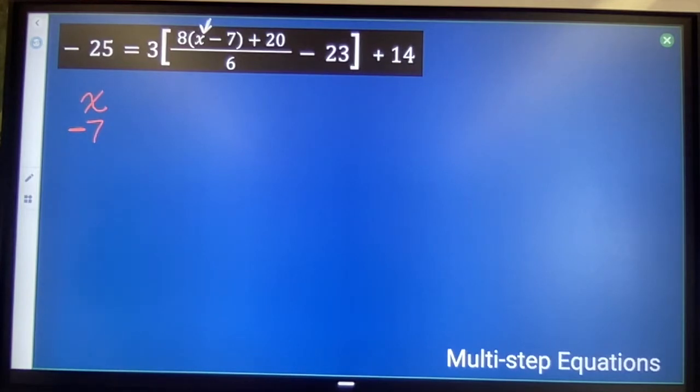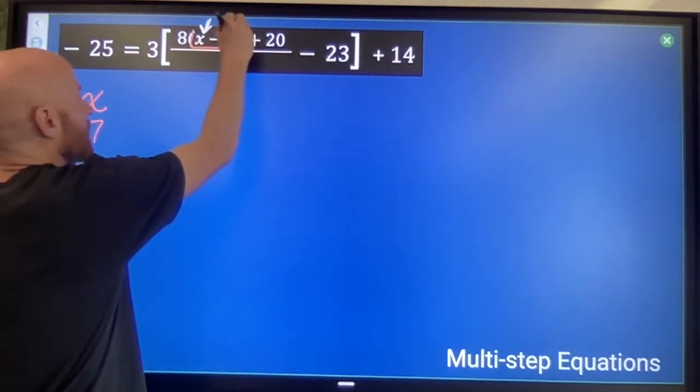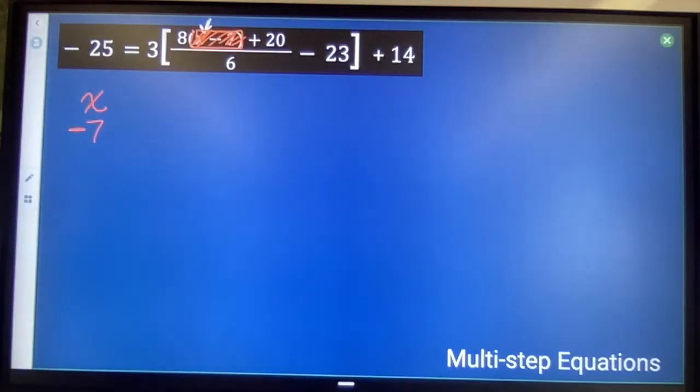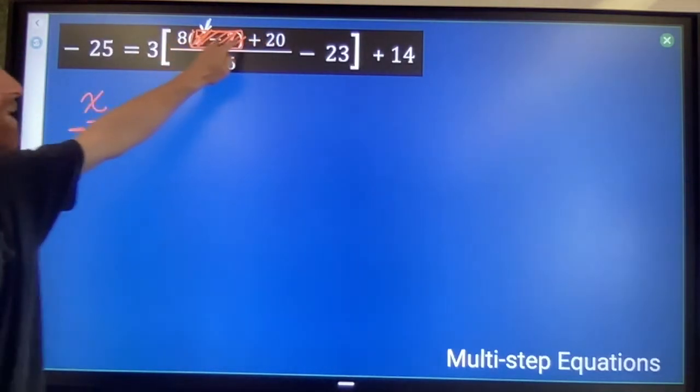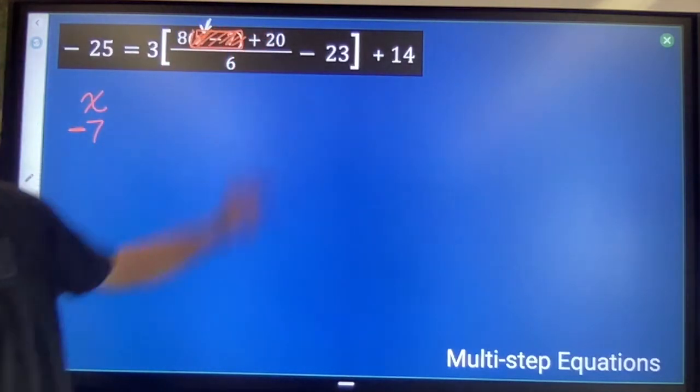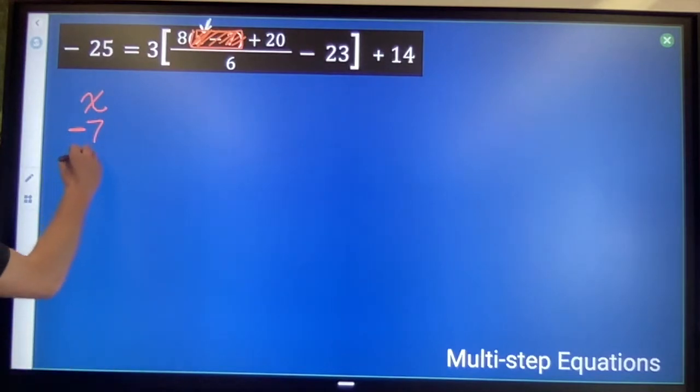What happens to my x minus 7? We've got two operations connected to it. Multiplication comes before addition, so multiplication and then addition.